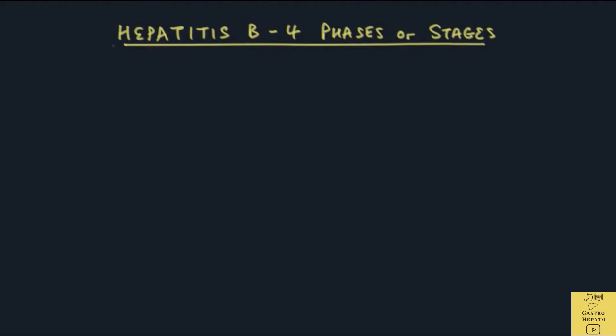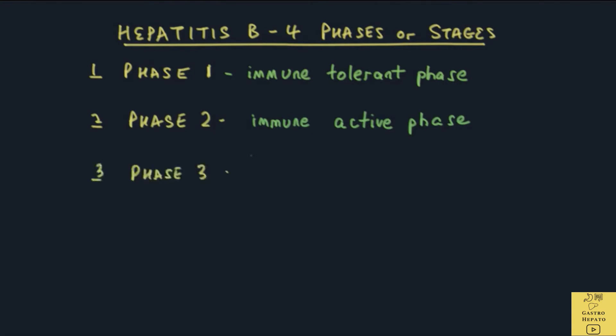The first stage is Phase 1, the immune-tolerant phase. The next phase is Phase 2, the immune-active phase. Phase 3 is called the immune-control phase. And finally we have Phase 4, the immune-escape mutant phase.